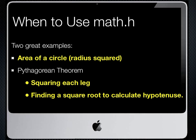We know that a squared plus b squared equals c squared. So if we're given a and b, we can use the POW function for finding the value of a squared and b squared. And then we can use the square root function to find the value of c.